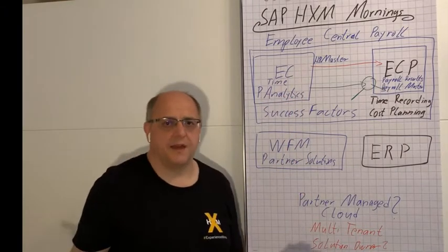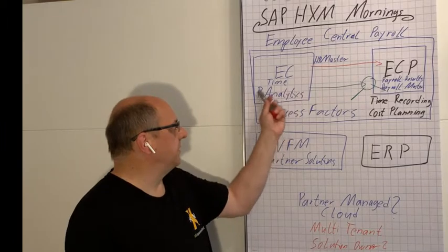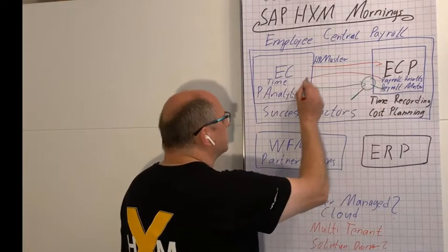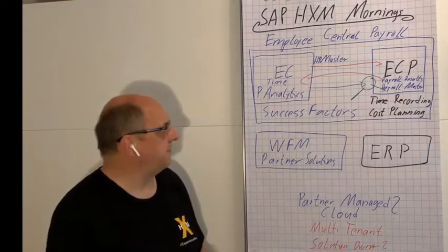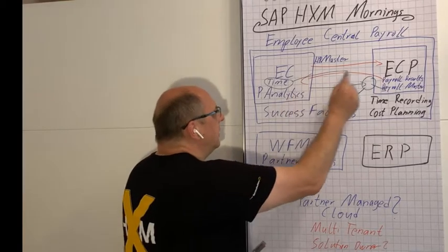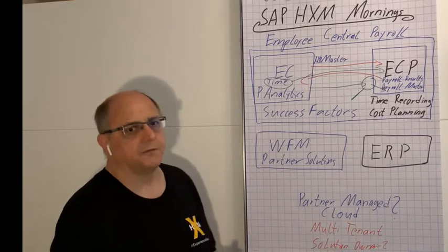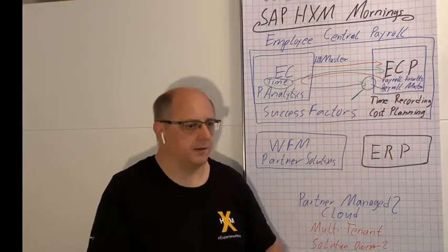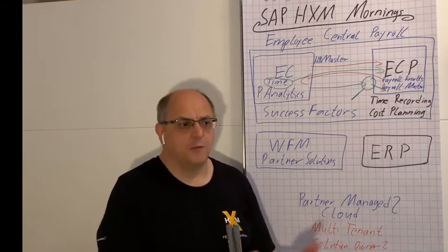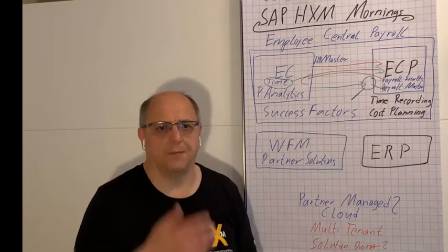Those payroll results might also be important for reporting and for people analytics in SuccessFactors. Therefore, there's also a solution to have this payroll data flowing back. If you're using the time and attendance solution here in SuccessFactors, that would also feed ECP through this direct point-to-point integration. It would fill, if you are familiar with the SAP HCM infotypes, infotype 2001 for absences and infotype 2010 for all the records out of time and attendance that are used in payroll for overtime or night shift allowances.